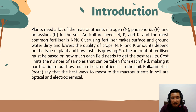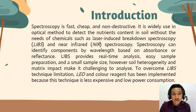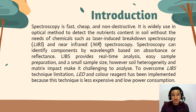There is a limit to the number of samples that can be taken from each field, making it hard to figure out how much of each nutrient is in the soil. Kulkarni 2014 said that the best way to measure micronutrients in the soil are optical and electrochemical spectroscopy, which is fast, cheap, and non-disruptive. It is widely used in optical methods to detect nutrient content in soil without chemicals, such as laser-induced breakdown spectroscopy (LIBS) and near-infrared (NIR) spectroscopy.